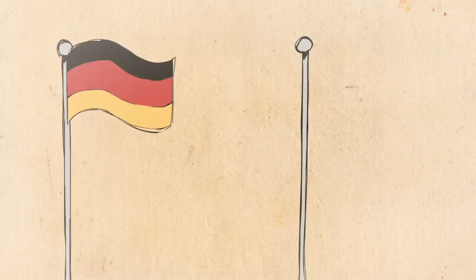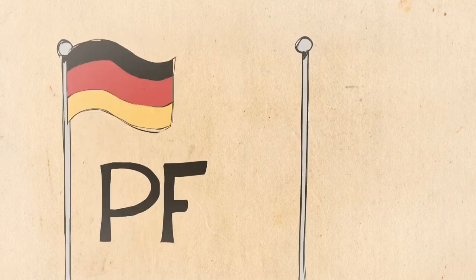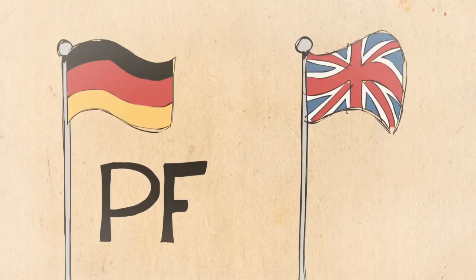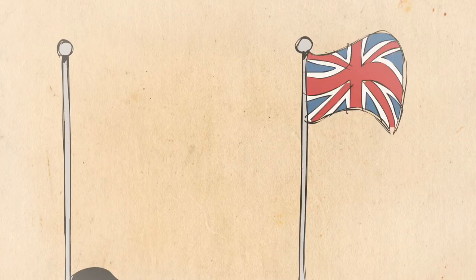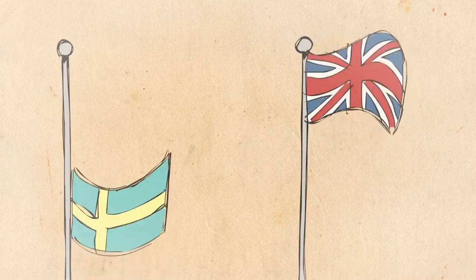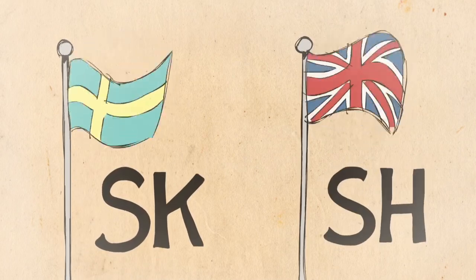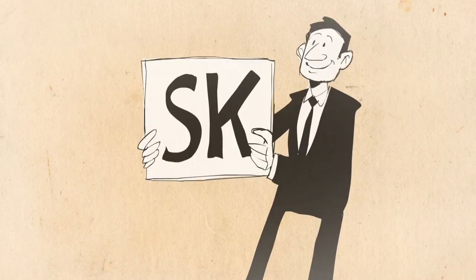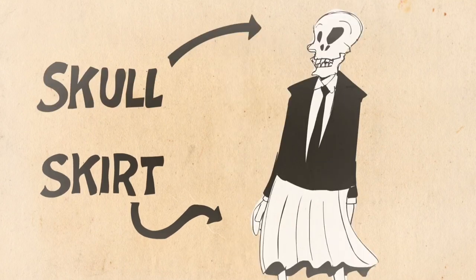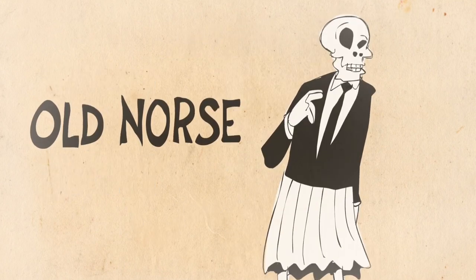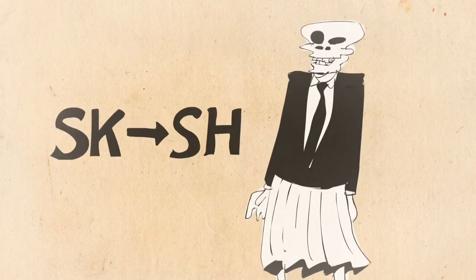For example, after the 6th century, German words starting with P systematically shifted to a PF sound, while their Old English counterparts kept the P unchanged. In another split, words that have SK sounds in Swedish developed an SH sound in English. There are still some English words with SK, like skirt and skull, but they're direct borrowings from Old Norse that came after the SK to SH shift.